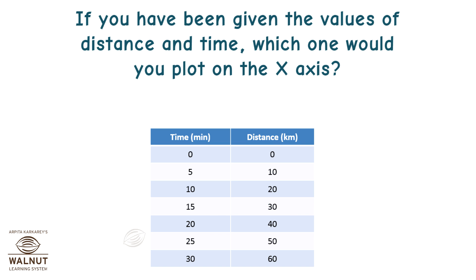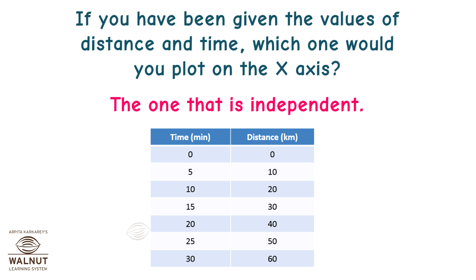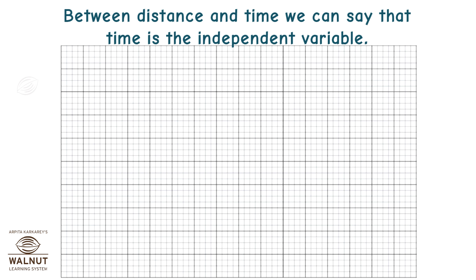If you have been given the values of distance and time, which one would you plot on the x-axis? The one that is independent. Between distance and time, we can say that time is the independent variable. So we mark that on the x-axis.